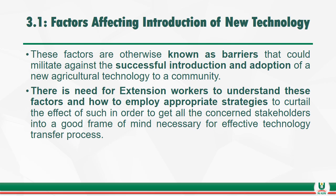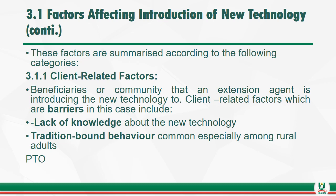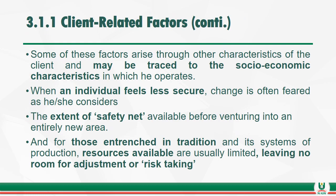There is a need for extension workers to understand these factors and how to employ appropriate strategies so that the technology can easily be adopted. There are about 6 factors in total. The first has to do with client-related factors — looking at the people that the technology is meant for and how the extension agent can overcome barriers that may stand in their way. Such barriers could be limited time, lack of knowledge, or the traditions of the people. Client-related factors may also be traced to socio-economic characteristics, and individuals who feel insecure will not want to accept the technology.